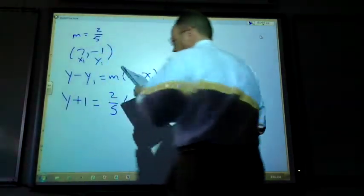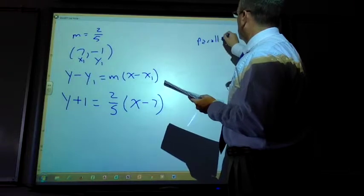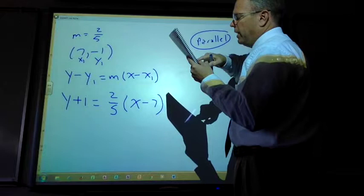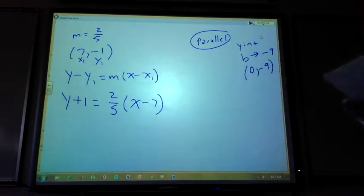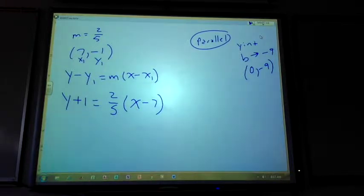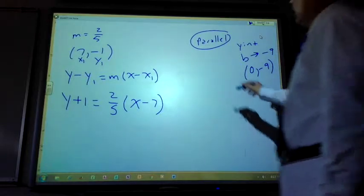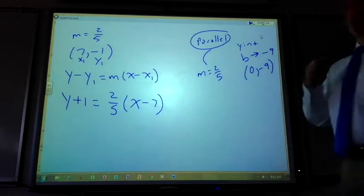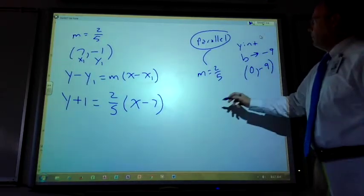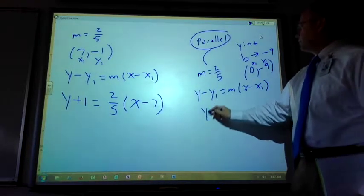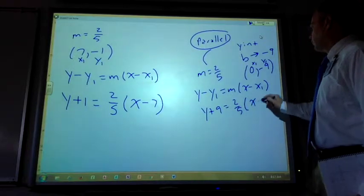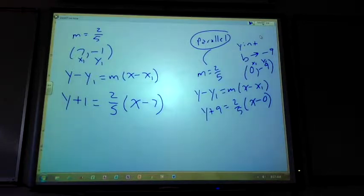Problem number 9 says find a line that's parallel to the line. It has a y-intercept which is b of negative 9. So parallel lines have the same slope. So if I'm looking for a line parallel, that means that this is going to have a slope of two-fifths. Then I'm going to use my y-intercept into this equation. That's X1, Y1, and just plug on in. That equation is parallel to the previous equation. That equation also contains the point 0, negative 9.